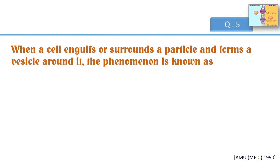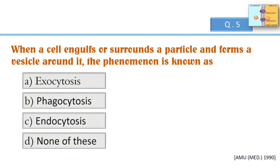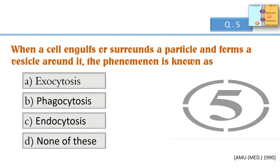When a cell engulfs or surrounds a particle and forms a vesicle around it, the phenomenon is known as?